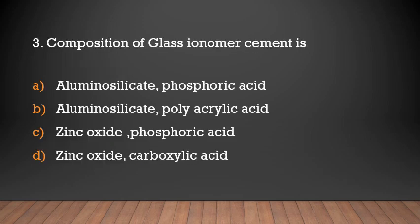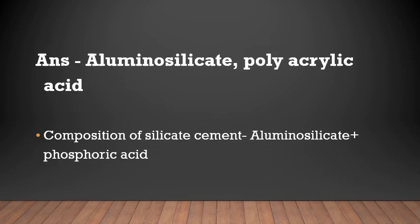Composition of glass ionomer cement is: (a) aluminosilicate phosphoric acid, (b) aluminosilicate polyacrylic acid, (c) zinc oxide phosphoric acid, (d) zinc oxide carboxylic acid. Answer: Glass ionomer cement contains aluminosilicate powder and polyacrylic acid liquid. The composition of silicate cement is aluminosilicate powder plus phosphoric acid liquid.